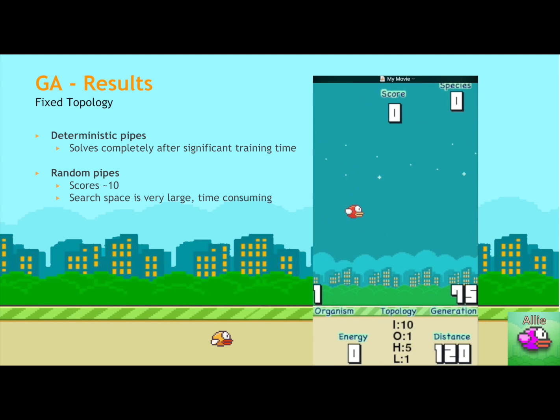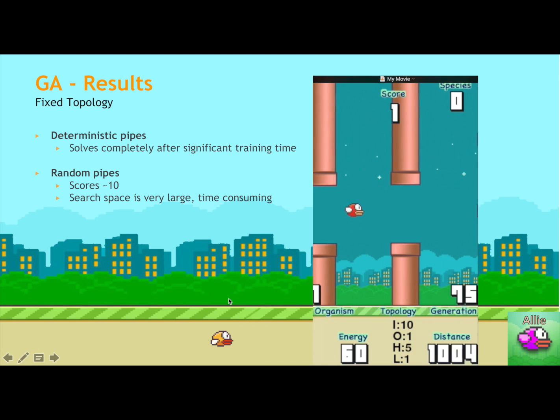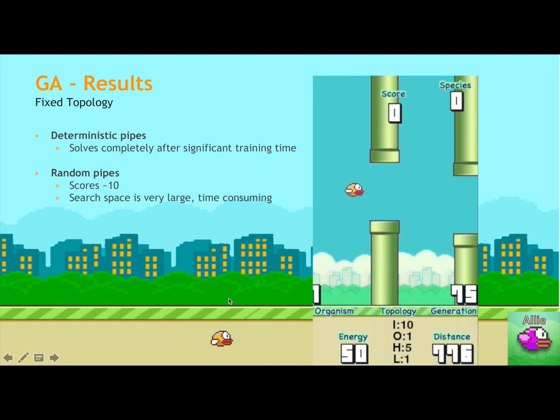So here are some results that we found for our fixed topology genetic algorithm. That is, we have one hidden layer with five neurons in it. We can solve the deterministic pipes problem completely, but it takes quite a long time because, as Brennan said, it has a big search space. And it can solve, it can do random pipes pretty well, but again, the time is very long. So here it is solving random pipes.